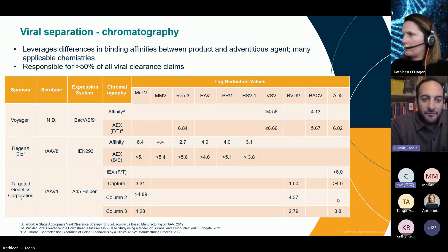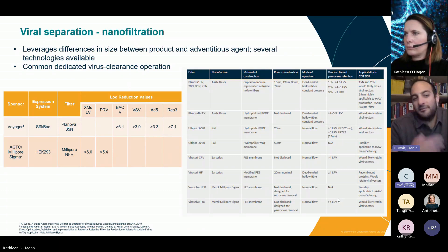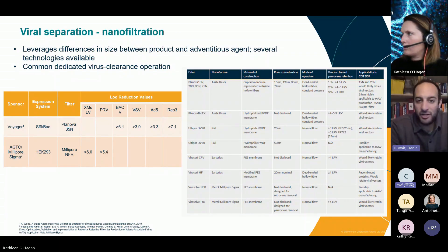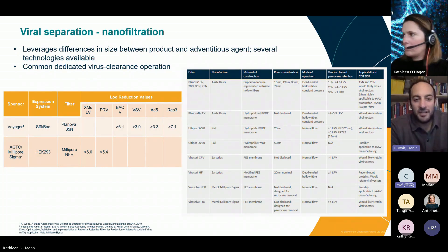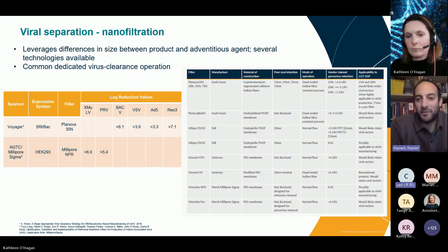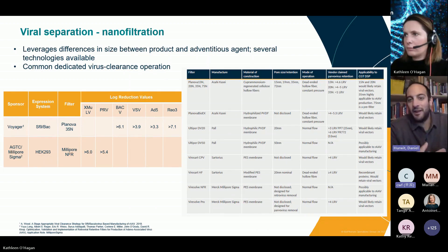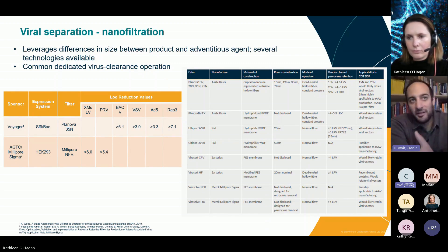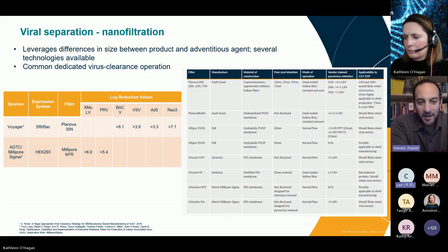The second typical separation technology is nanofiltration, or virus retentive filtration. This is, again, a physical separation — like with chromatography, you're not necessarily inactivating or disrupting the virus; you're physically removing it from your product stream or vice versa. This leverages size differences. The table on the right shows that there are many different nanofilters and a lot of different VRF technologies.